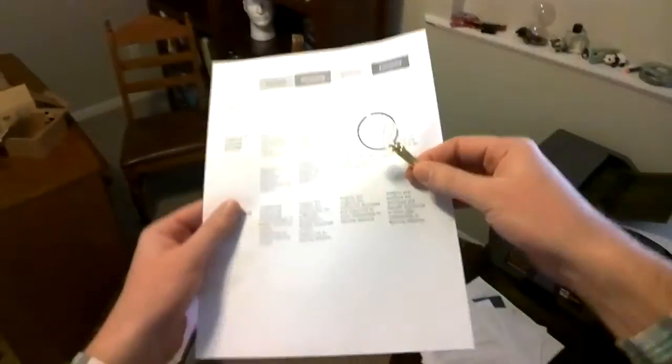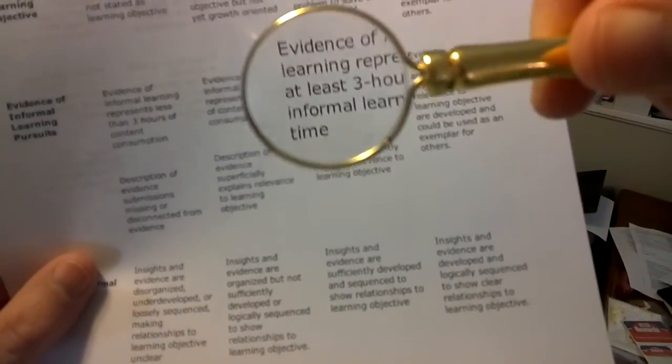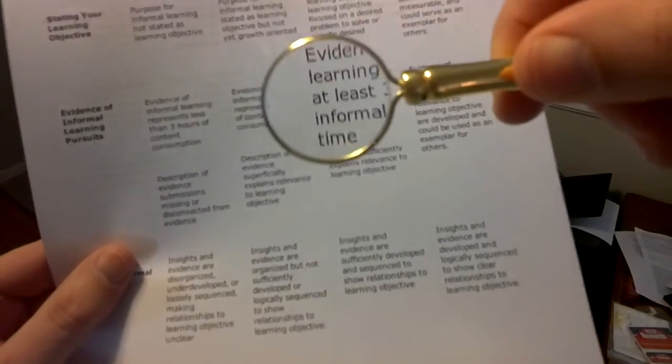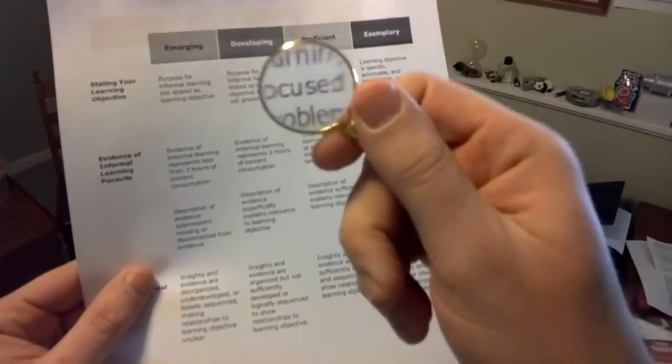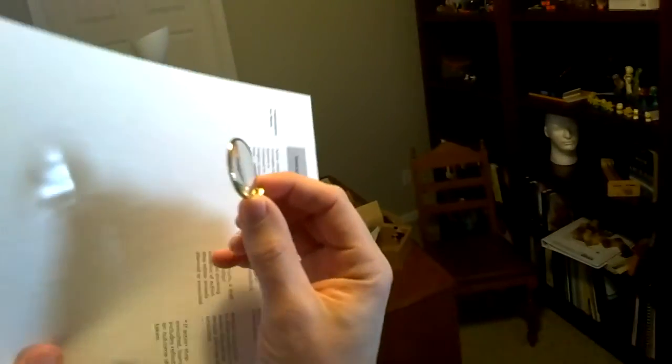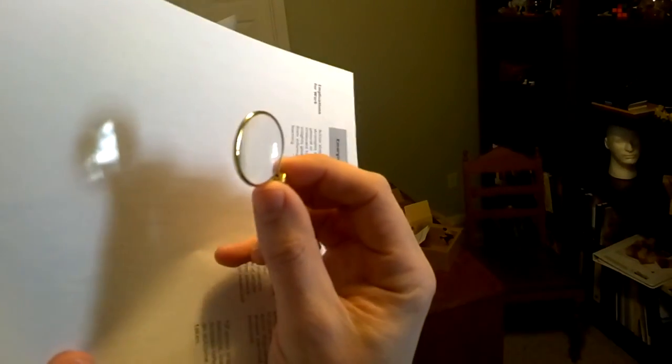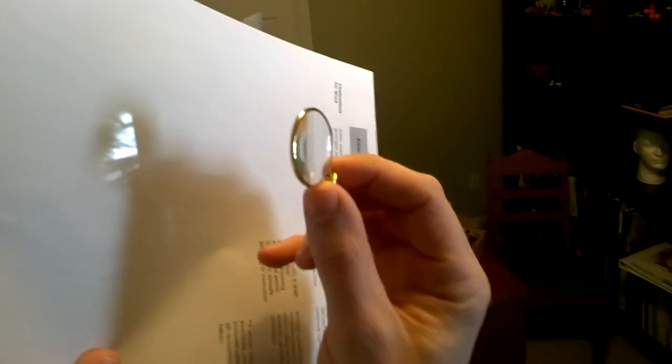You normally think of magnifying glasses being used to magnify things, right? When you hold it in front of some text, it makes the text look bigger. But that's actually the most boring thing that magnifying glasses do. Because this magnifying glass is really a convex lens. And what convex lenses can do is make real images. I've got a window here — I can actually focus that window and make a very real image of the window right on this piece of paper.